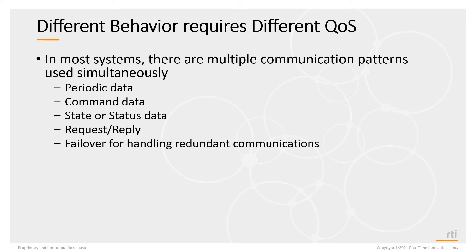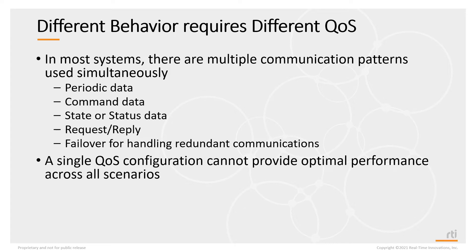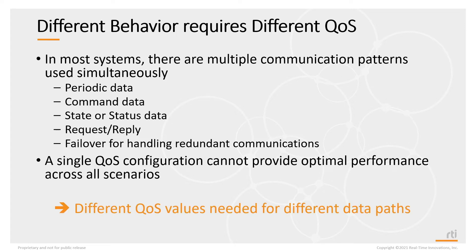In most systems, there's not just a single communication pattern being used — there's usually multiple. You may have data that's periodic, data representing commands, data representing state or status information. You may need to do request-reply, not just publish-subscribe. You may need to handle failover from redundant applications. A single QoS configuration cannot be used to provide the same behavior across all scenarios; you need different QoS values for different data paths.